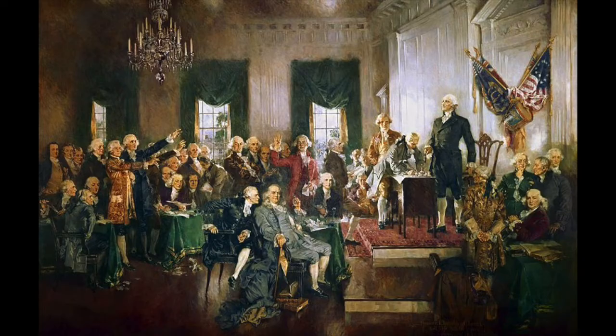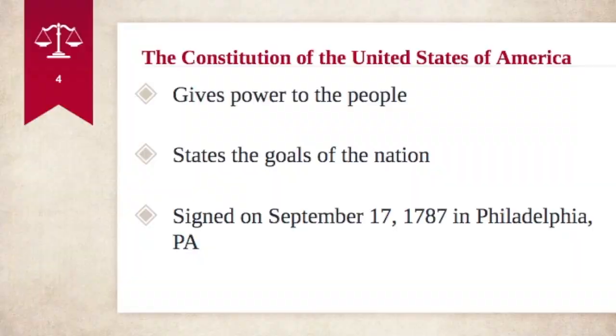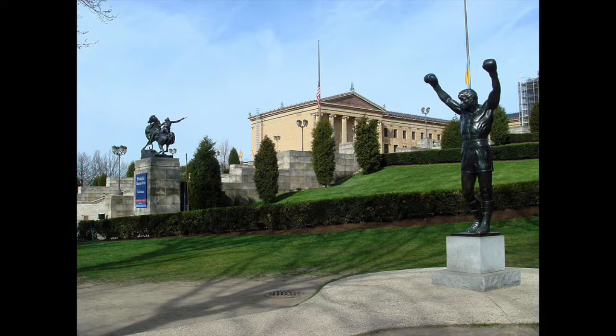Let's start off by talking about the United States Constitution. The Bill of Rights is the first ten amendments to the United States Constitution. I have a separate video where we look at the Constitution more closely, and I'll link to that down below. You should know that the Constitution creates a system of government that puts the power in the hands of the American people. The Constitution is a document that states the goals of the nation as the Founding Fathers envisioned them, and it was signed on September 17th, 1787, in Philadelphia, Pennsylvania, at a place that's now called Independence Hall.